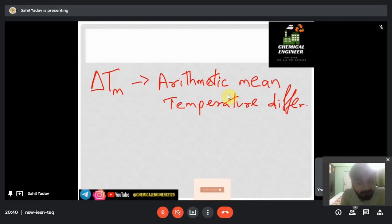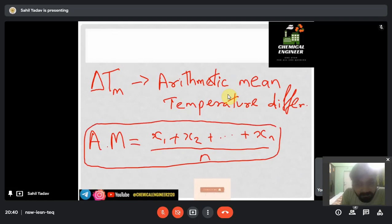Arithmetic mean temperature difference is calculated based on the linear profile. Like suppose we have x₁ + x₂ + ... + xₙ and we divide it directly by n. So AMTD is calculated based on the linear profile.